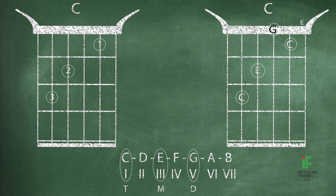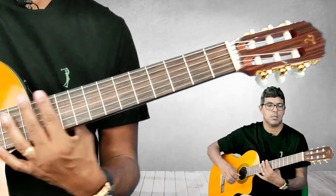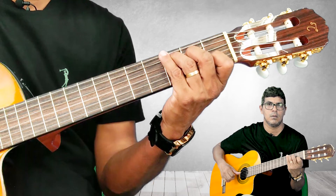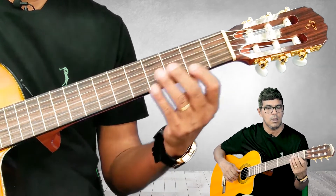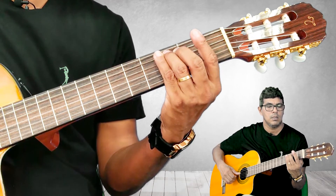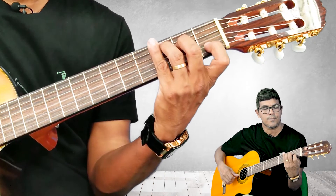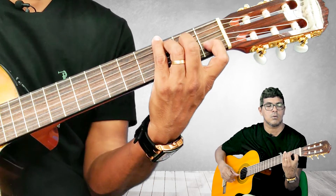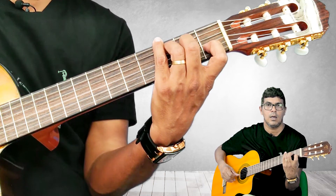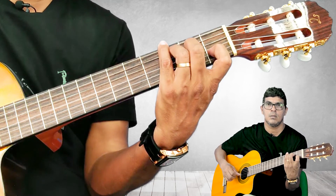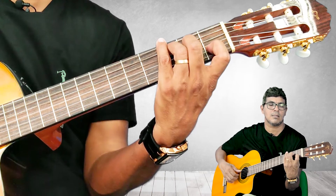No primeiro exemplo, nós teríamos a escala Dó, Ré, Mi, Fá, Sol, Lá, Si, Dó. O primeiro, o terceiro e o quinto grau seria Dó, Mi, Sol — portanto, esse acorde aqui. De acordo com o diagrama, eu estou tocando a nota Dó na quinta corda da terceira casa, a nota Mi na quarta corda da segunda casa, e a nota Dó na segunda corda da primeira casa. Também a nota Mi na primeira corda e a nota Sol na terceira corda. Observe que usei o tempo todo as notas Dó, Mi e Sol, todas pertencentes ao acorde de Dó, utilizando o raciocínio de primeira, terceira e quinta.